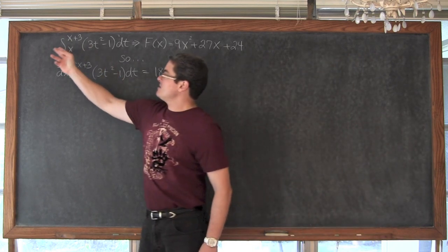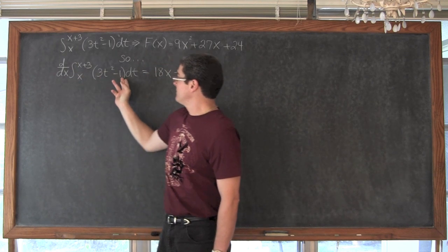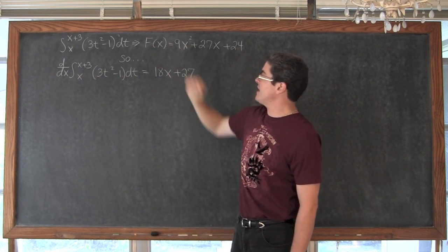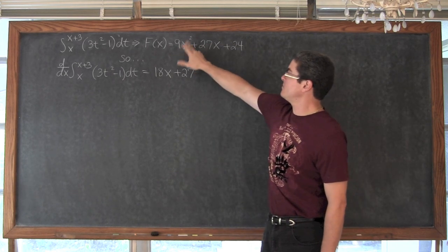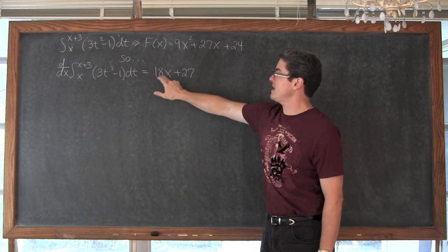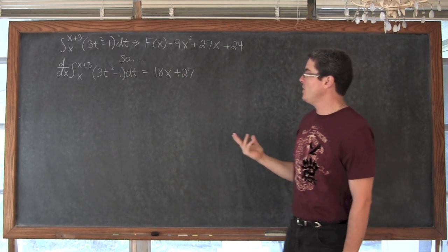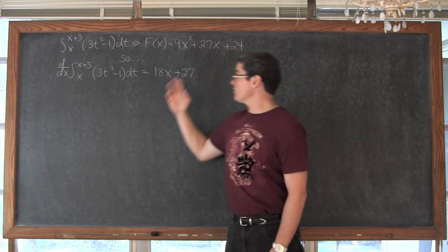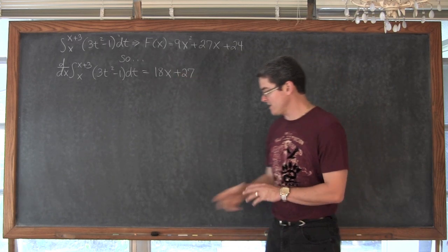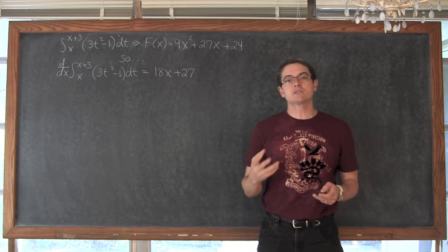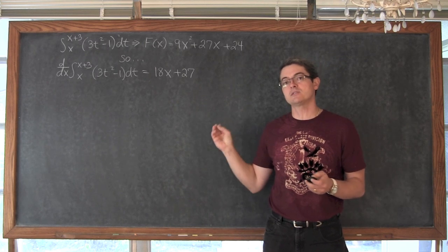So the derivative with respect to x of this definite integral is equal to F prime of x. The derivative with respect to x of 9x squared plus 27x plus 24 brings down the 2: 9 times 2 gives 18x, and 27x simply becomes 27. So we can see that we are not just taking t out and replacing it with x — there is a lot more going on.